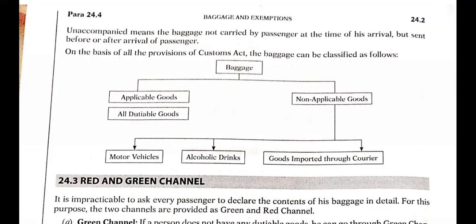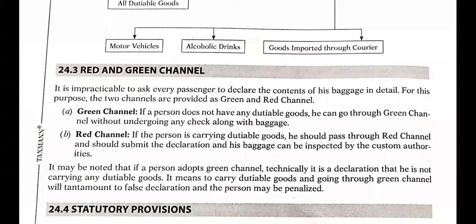When you bring goods, they are classified under red and green channels. It is impractical to ask every passenger to declare the contents of baggage in detail, so for this purpose two channels are provided: green channel and red channel. The passenger is asked by custom authorities to declare in a form whether the green channel or red channel is applicable.